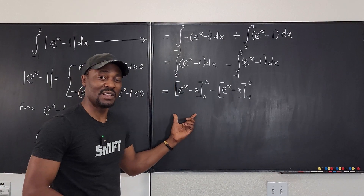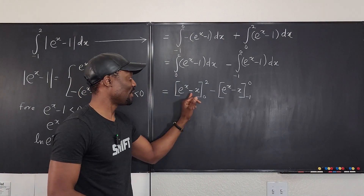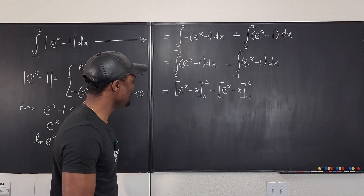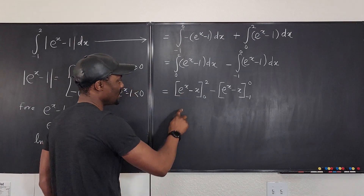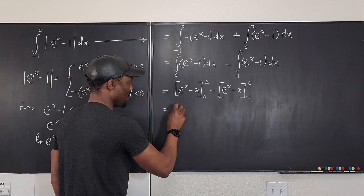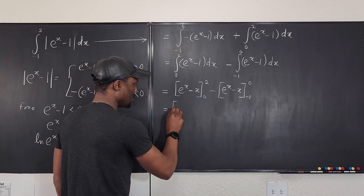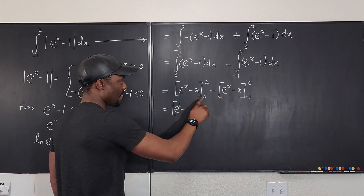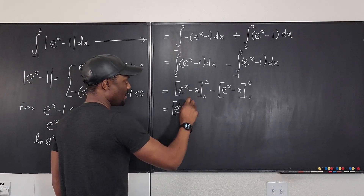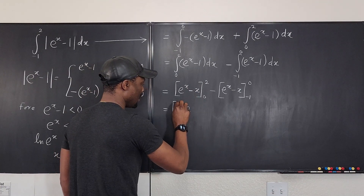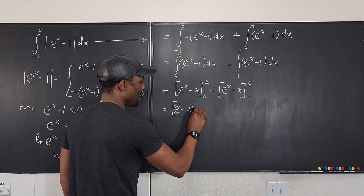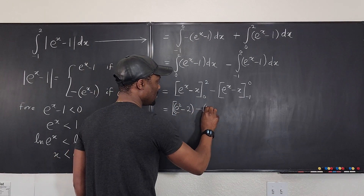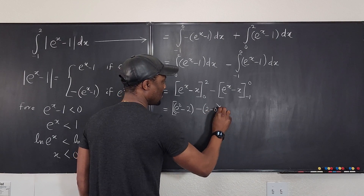Now you have to be very careful while evaluating because of the minus signs. So this is going to be e squared — we have e squared, we put two in here, minus two. So put this in here minus — we evaluate this — this is going to be e to the two minus two, minus e to the zero minus zero, which is two minus zero.